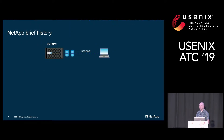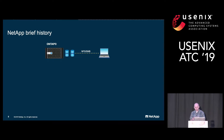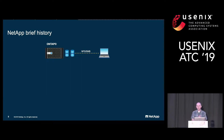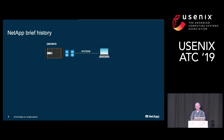A brief history of how NetApp got here. Twenty years ago, we had a single filer appliance to manage client data in a simple way. It used ONTAP as our customized operating system and Waffle as our local file system. Clients accessed it using an over-the-network protocol like NFS or SMB. The original system had a single point of failure: the filer itself.